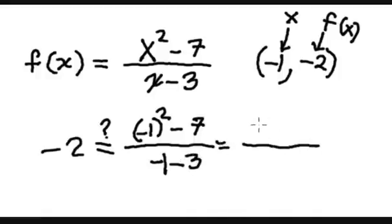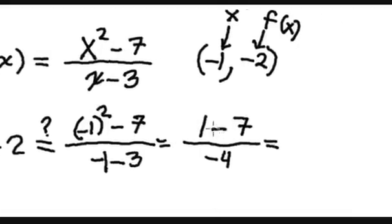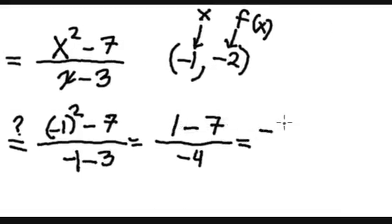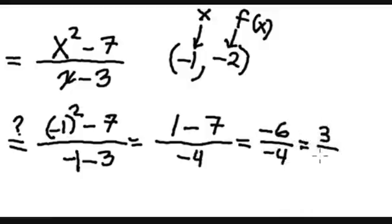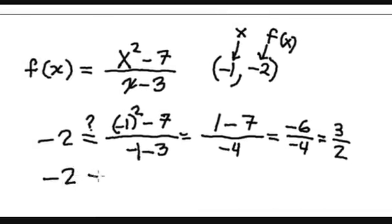On the top we have negative 1 squared is 1 minus 7. On the bottom, negative 1 and negative 3 is negative 4. So 1 minus 7 is negative 6 over negative 4. Negative divided by negative is positive, and reducing to lowest terms gives 3 over 2. Obviously negative 2 is not equal to 3 over 2.